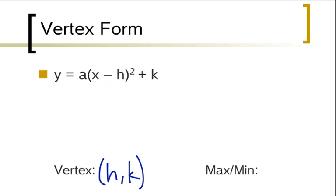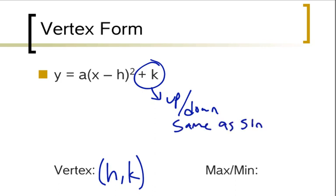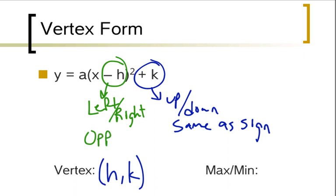Now if we're looking at this equation, if we had numbers in here, the k causes the graph to go up or down, the same as the sign. The h, the minus sign there, causes the graph to go left or right, opposite of the sign. That's because the negative sign is actually supposed to be in there.